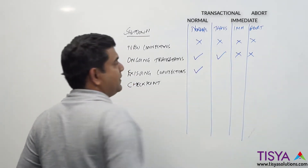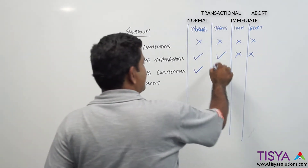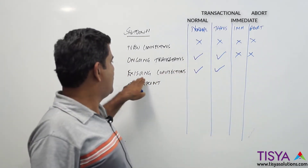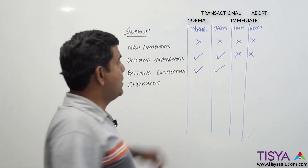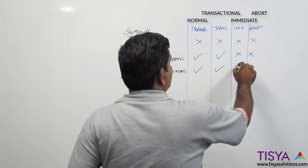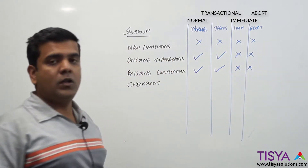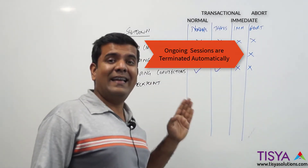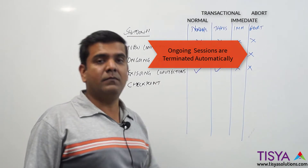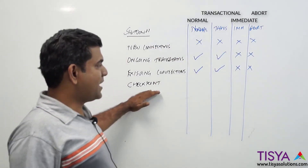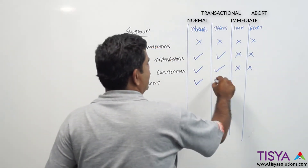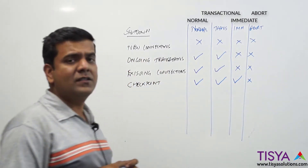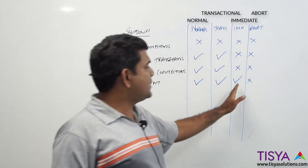Existing connections continue to exist in a shutdown normal and also in a shutdown transactional. When you do a shutdown immediate, connections are cut out. When you do a shutdown abort, existing connections are also immediately terminated. A checkpoint is going to happen in normal, transactional, and immediate shutdowns, but not in a shutdown abort.